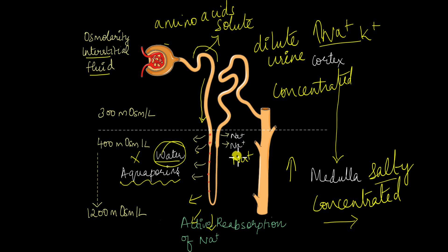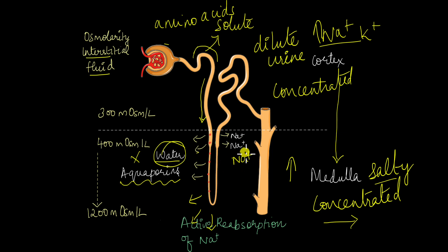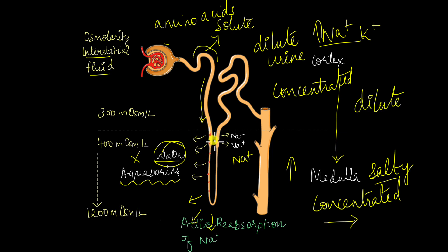We are not removing water here — we are removing only the solute, only the sodium. This means that we are actually making the urine dilute in the ascending limb. So this seems sort of counter-intuitive — why do we need to make it concentrated and then make it more dilute again?